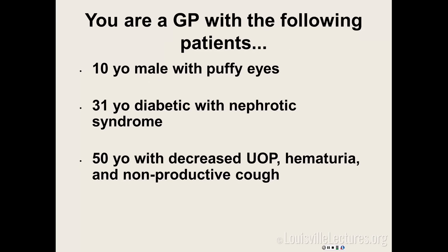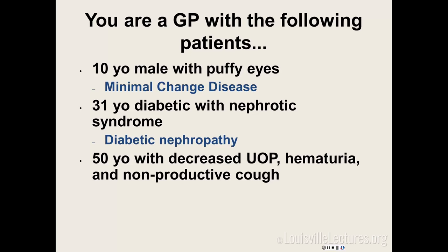Let's go over some quick cases. You're a primary care physician with a 10-year-old kid who comes in with puffy eyes — that's nephrotic syndrome. The most common nephrotic syndrome in kids is minimal change disease. A 31-year-old diabetic with nephrotic syndrome — common things being more common. A 50-year-old man comes in with decreased urine output, hematuria, and nonproductive cough — differentials include GPA, formerly known as Wegener's, or Goodpasture's, or eosinophilic granulomatosis if they give you a history of asthma.